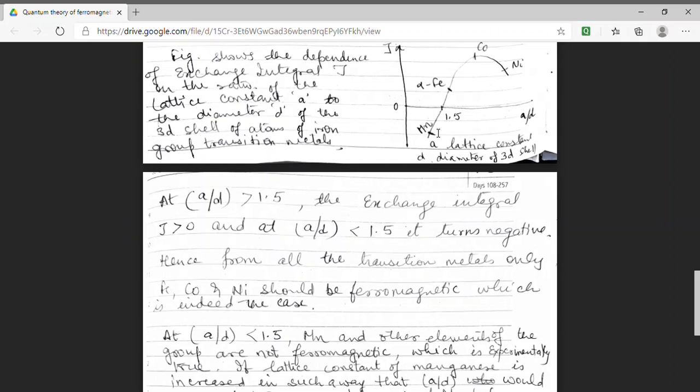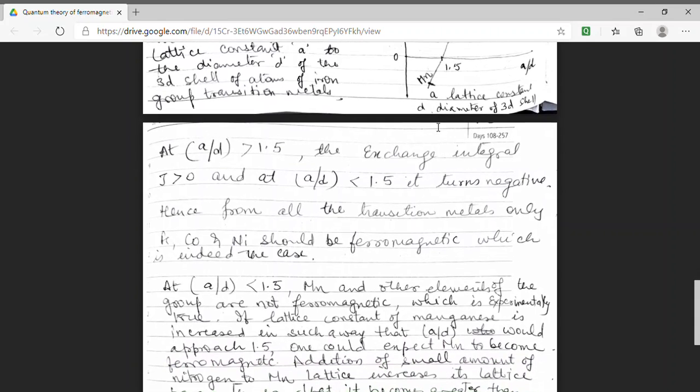If such situation happens then the behavior of material should change. That means if A by D of manganese with the addition of some element becomes greater than 1.5, then it should show ferromagnetic behavior. Students, yes, this happens.